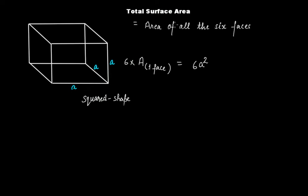Therefore, the total surface area of a cube is given by 6a², where a is the length of each side of the cube.